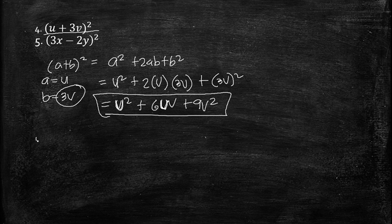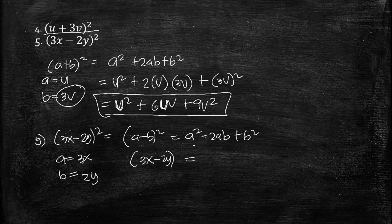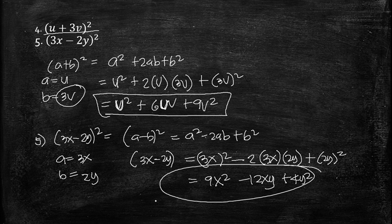Number five is (3x − 2y)². This is in the form (a − b)² = a² − 2ab + b², where a = 3x and b = 2y. So we get 9x² − 2(3x)(2y) + 4y² = 9x² − 12xy + 4y².